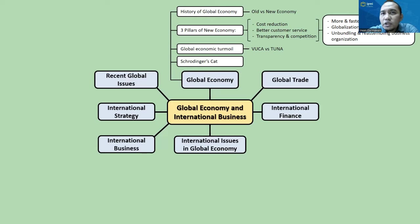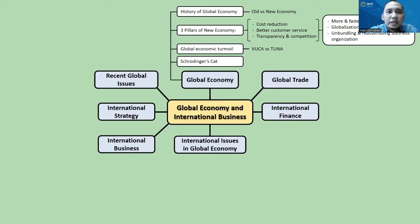We also learn about TUNA, which stands for turbulent, uncertain, novel, and ambiguous. We also learn about Schrödinger's cat, a term from quantum mechanics that illustrates the condition of a virtual cat in between alive and dead, exposed to random subatomic events that may or may not occur. Our current global economy is considered similar to Schrödinger's cat, where disruption to the economy may or may not happen right now.